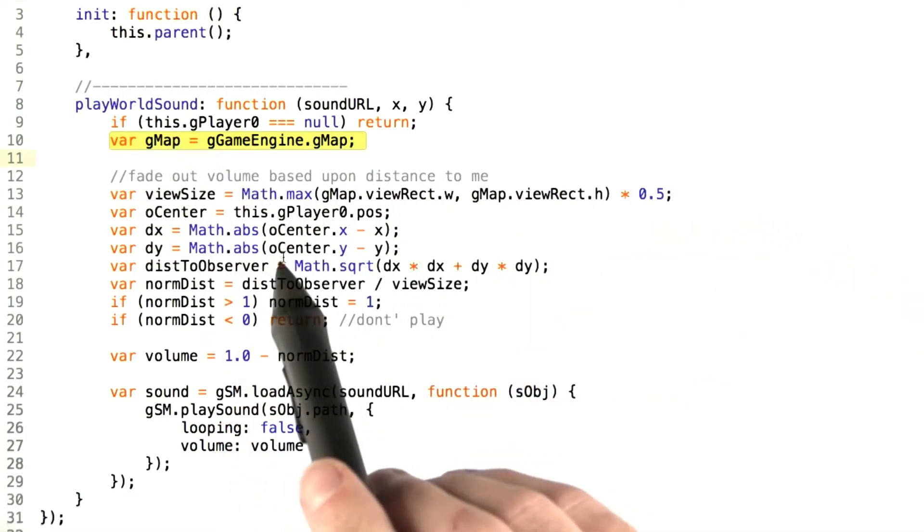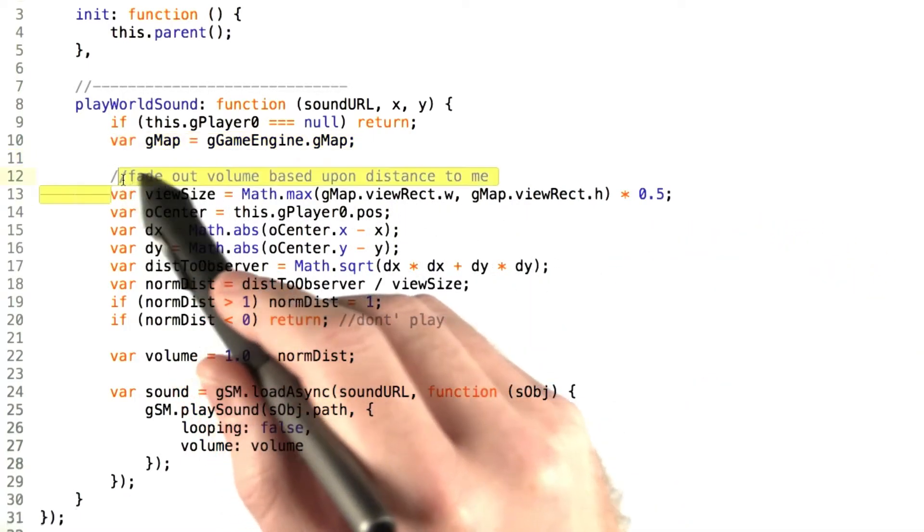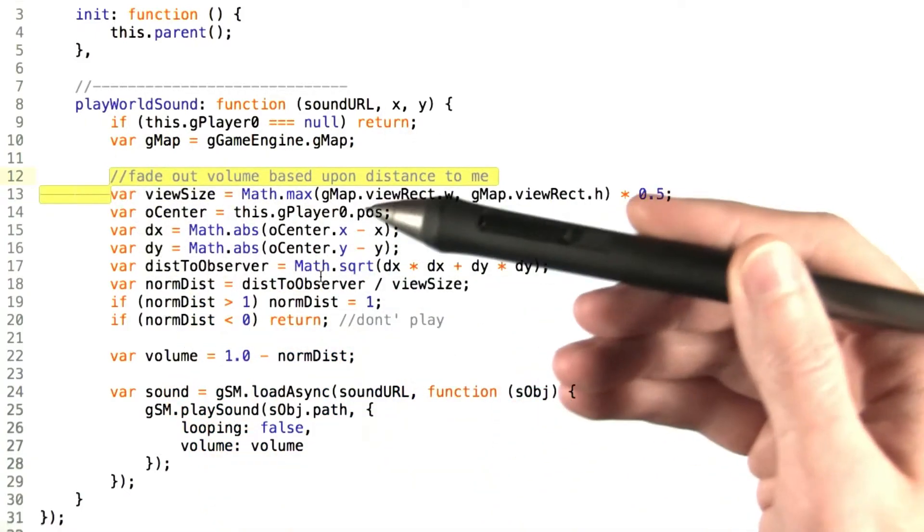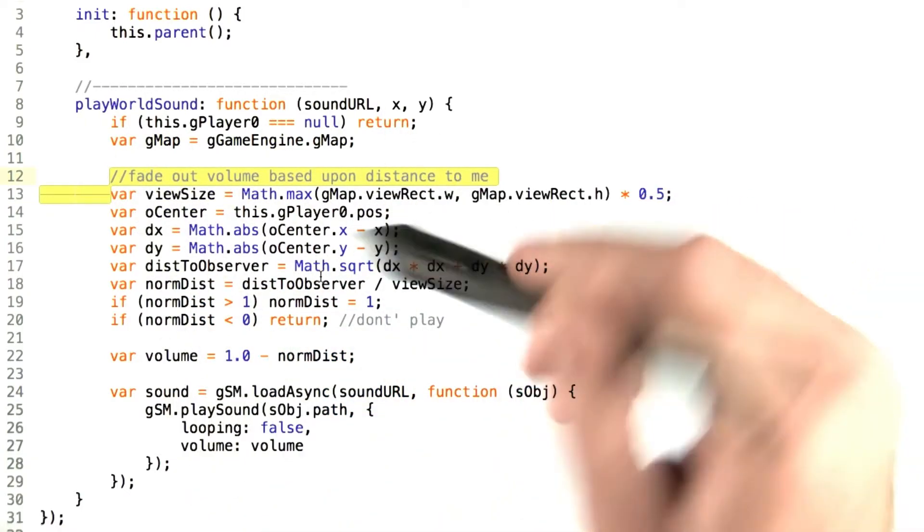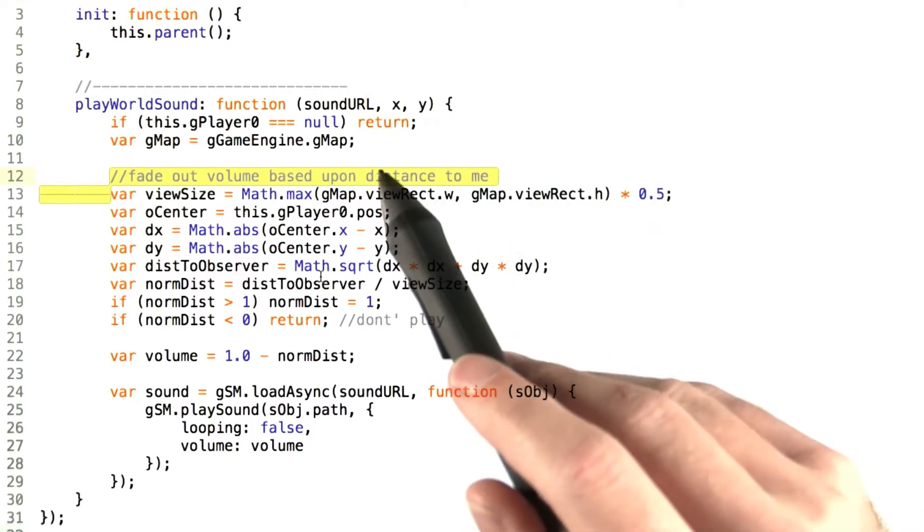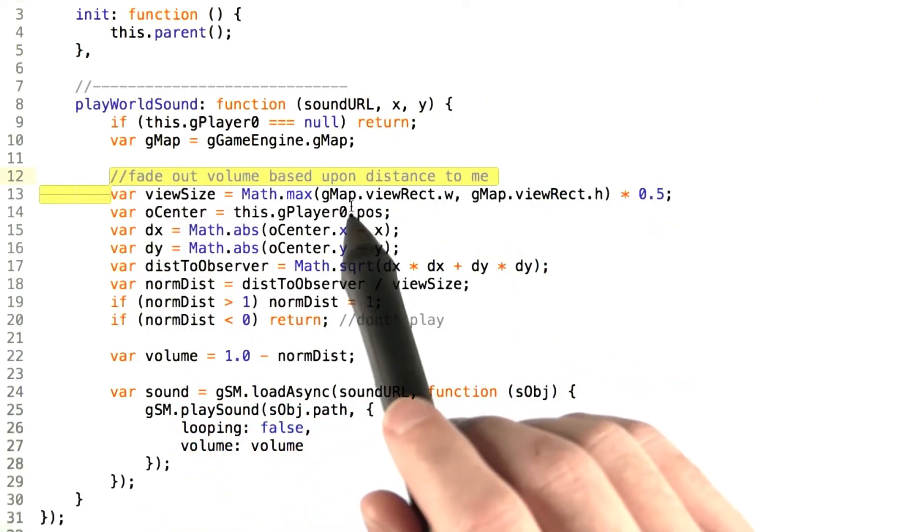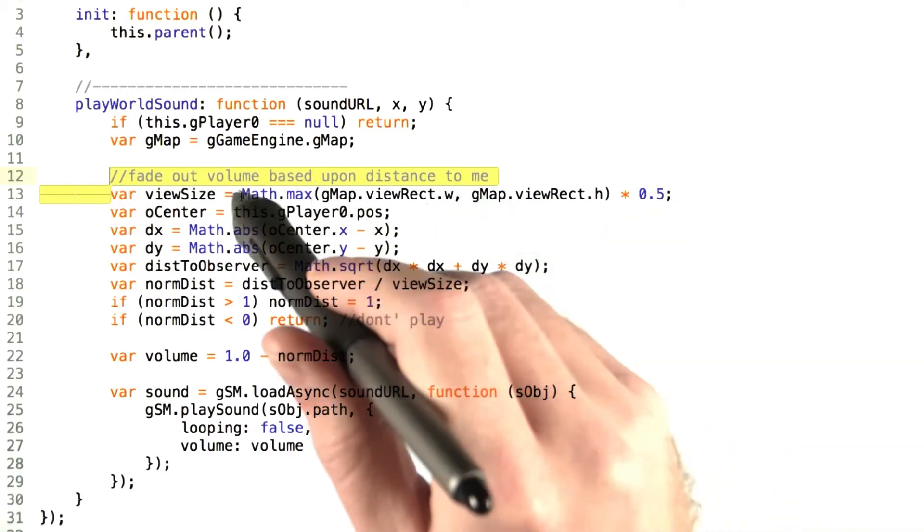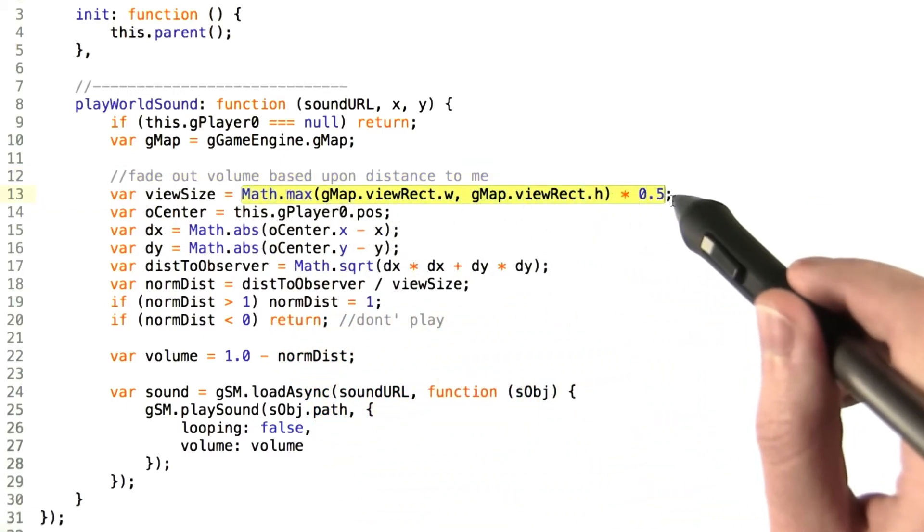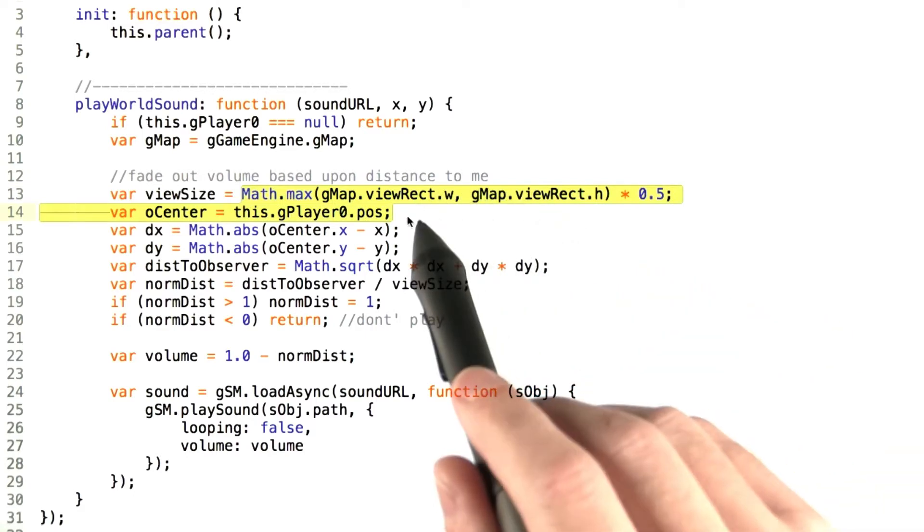Now we do the calculation for fading the volume out based upon the distance from the player that the sound is supposed to be played at. First we check the view size of the map's view rect, and we're going to do this as a square rather than as a rectangle for simplicity's sake.